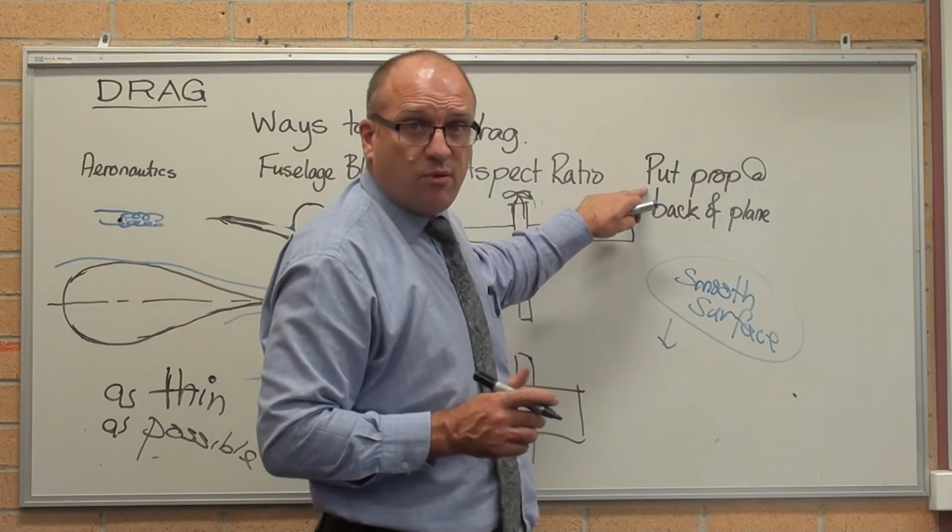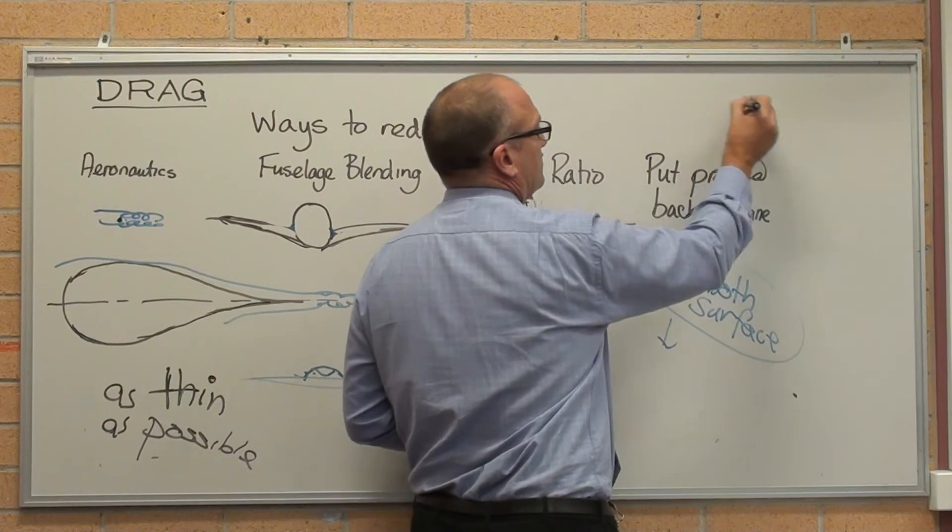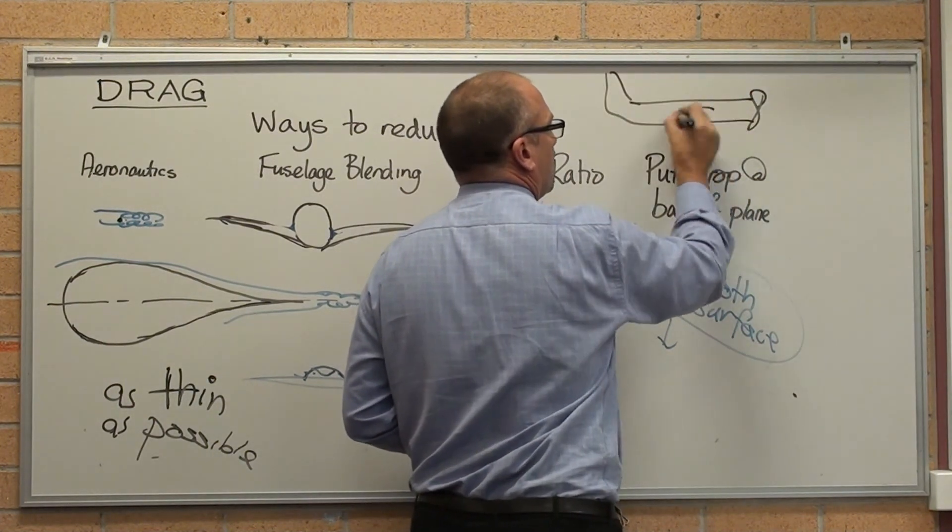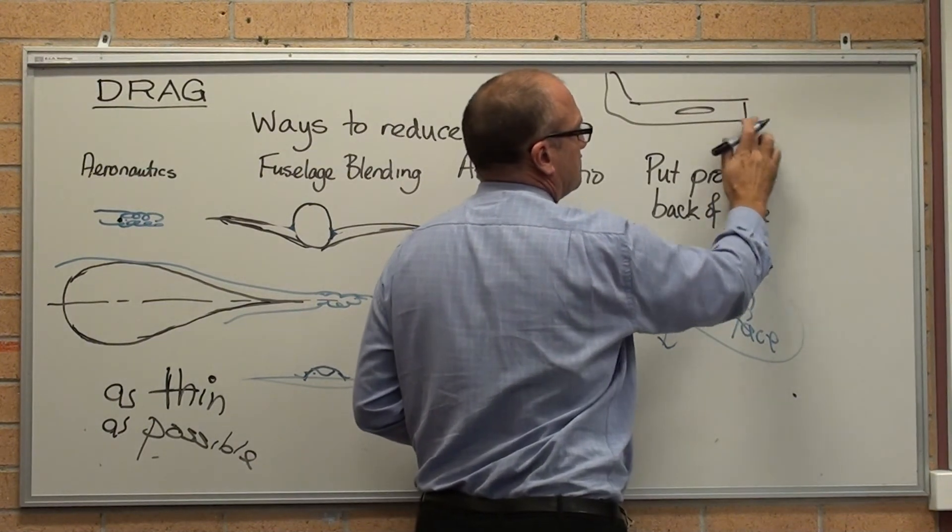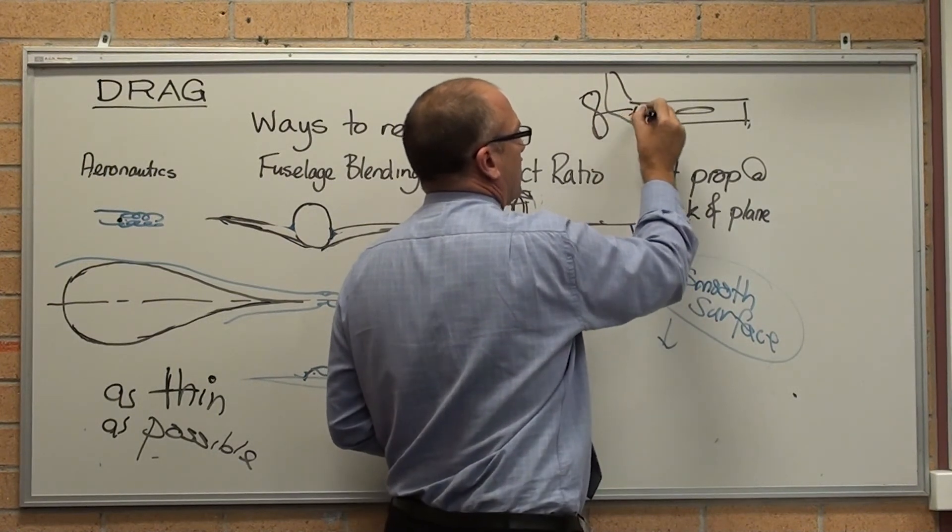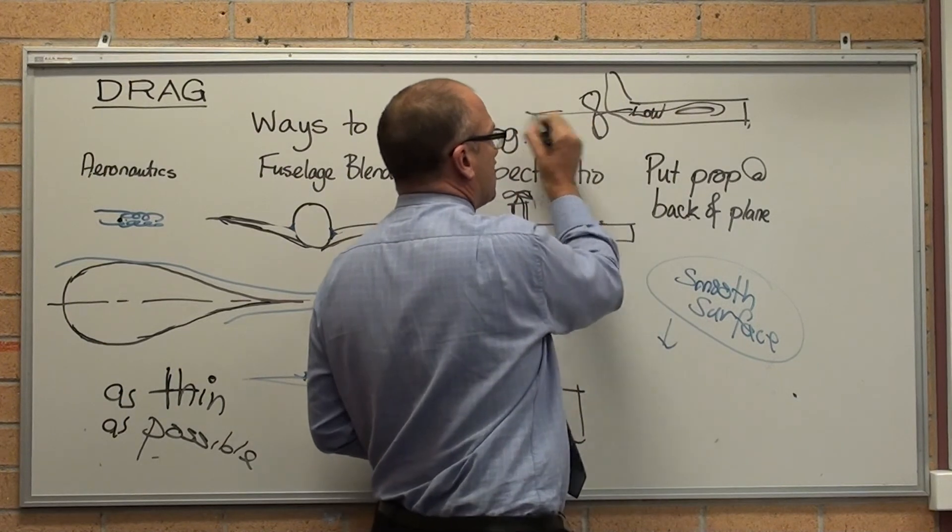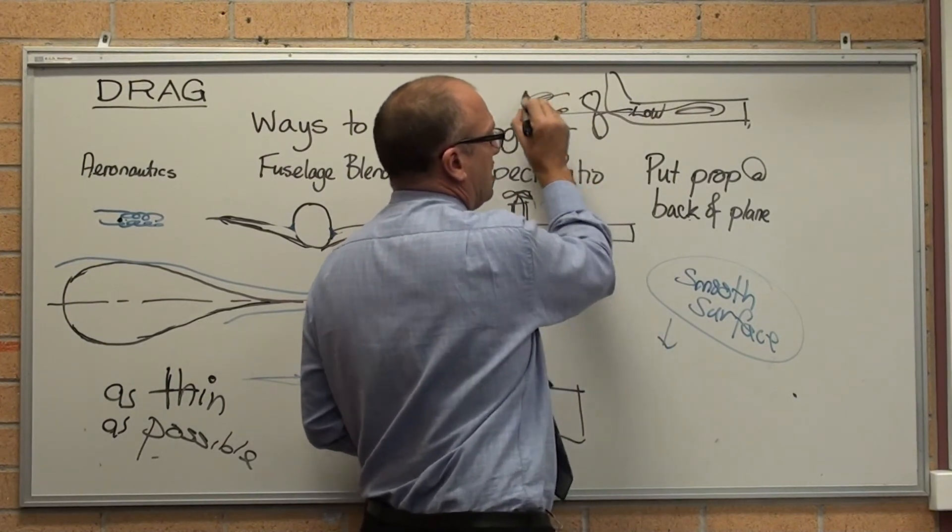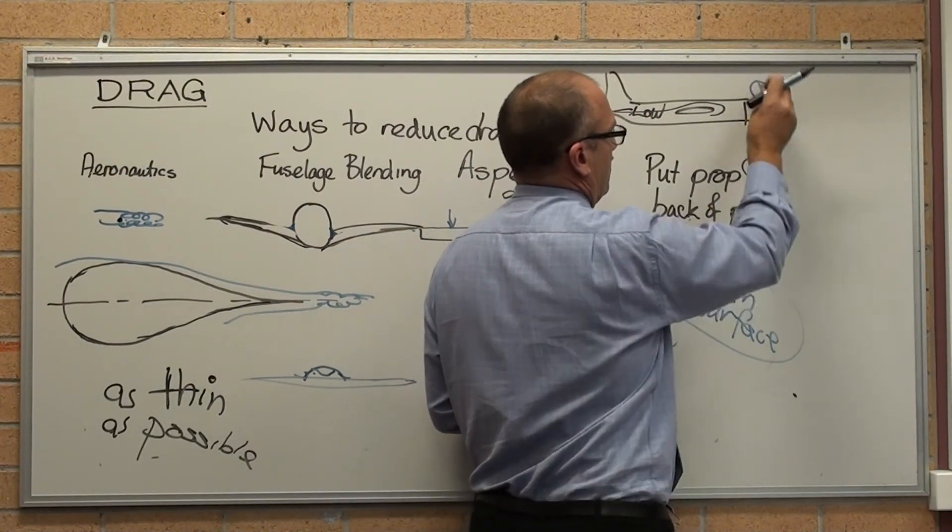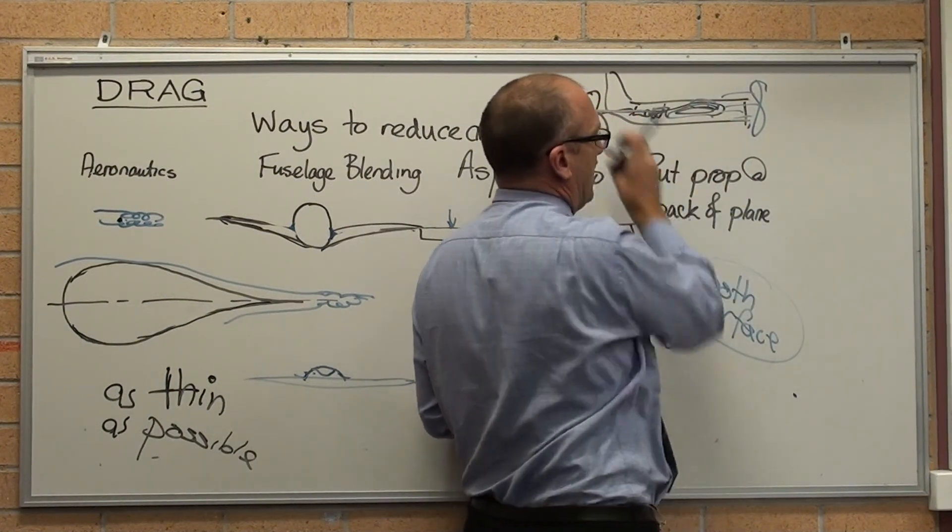Dumb question. Why is a propeller at the front of the plane? You can actually put a propeller, instead of sitting at the front of the plane, you can make what they call a pusher aircraft. That's the low pressure area. So all the turbulence from the wings gets sucked and pushed out the propeller. Instead of turbulence, more turbulence and out it goes.